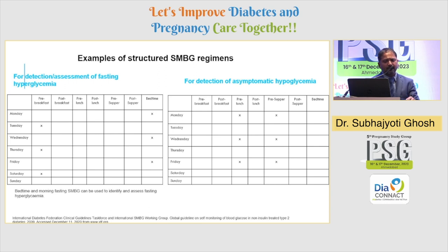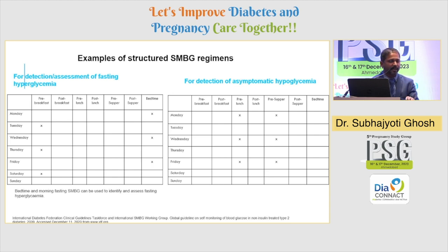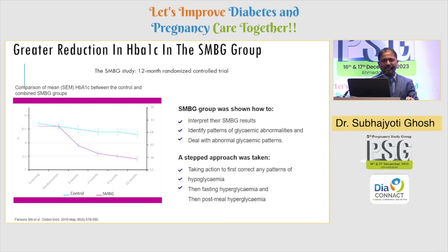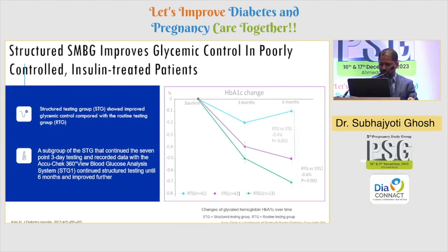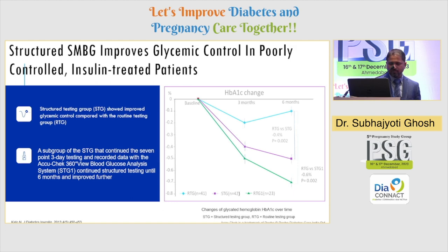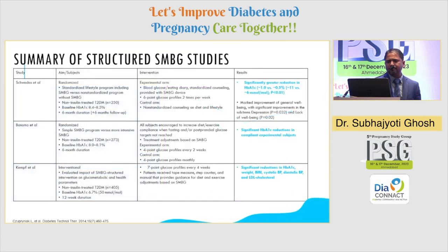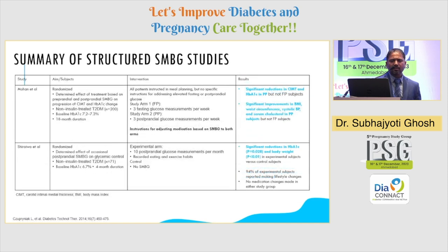This is what we know about fasting, hypoglycemia, and how to look at SMBG to control fasting levels. For asymptomatic hypoglycemia, we need to check pre-lunch and pre-supper, where chances of hypoglycemia are higher in pregnant ladies. These are studies showing the reduction of A1C compared with SMBG versus control, and showing A1C changes with structured SMBG testing. Looking at the data over six months, there is a significant reduction in the structured testing group.